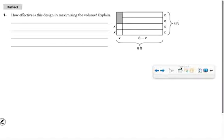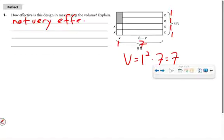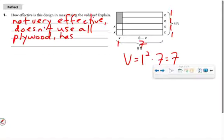How effective is this design in maximizing the volume? Well, once again, we're not using all of it. So we probably already have a guess that it's going to be less than 12. But let's do the math and figure out. Now, they have some of these lengths labeled as x, but right away you'd realize that x is 1. All right, so volume equals 1 squared times 7, which is 7. So how effective is this design? Again, not very effective at all. Doesn't use all the plywood. It has less volume.